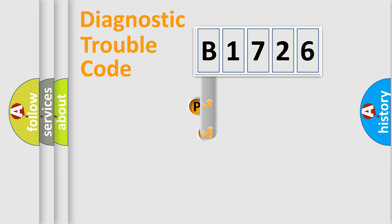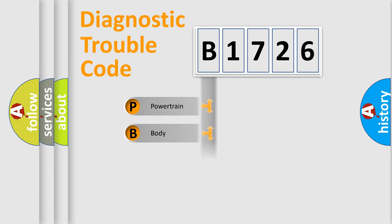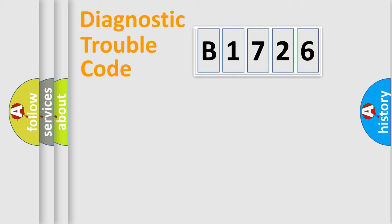First, let's look at the history of diagnostic fault code composition according to the OBD2 protocol, which is unified for all automakers since 2000. We divide the electric system of an automobile into four basic units: Powertrain, Body, Chassis, and Network.